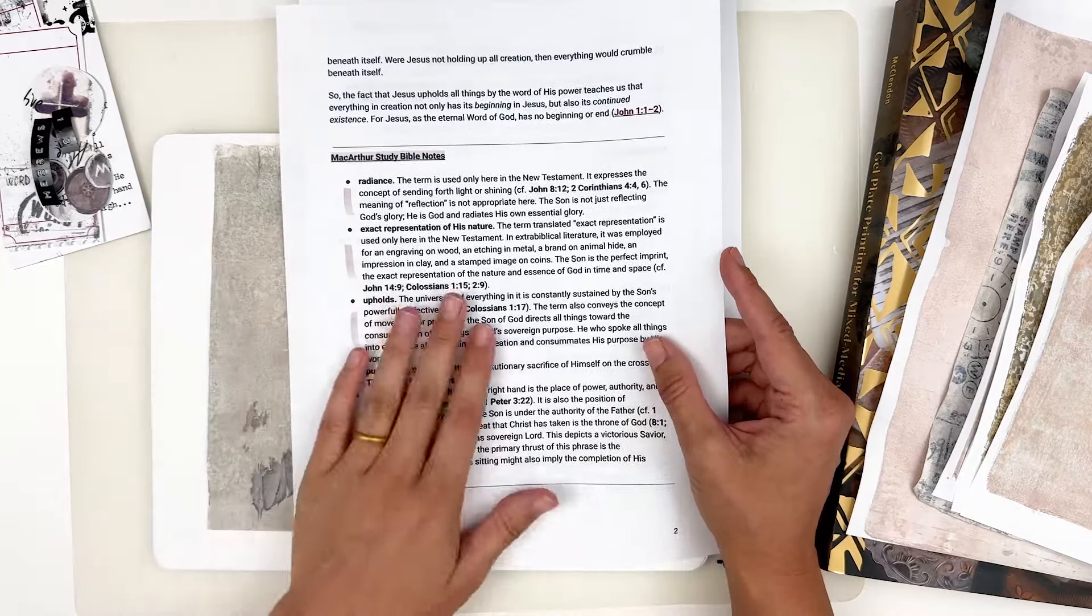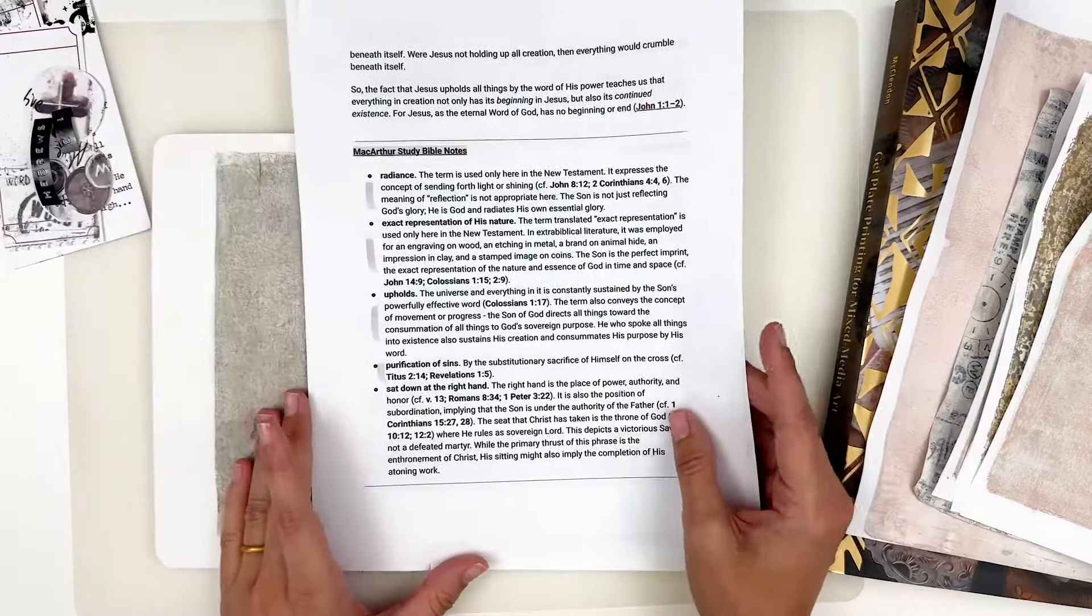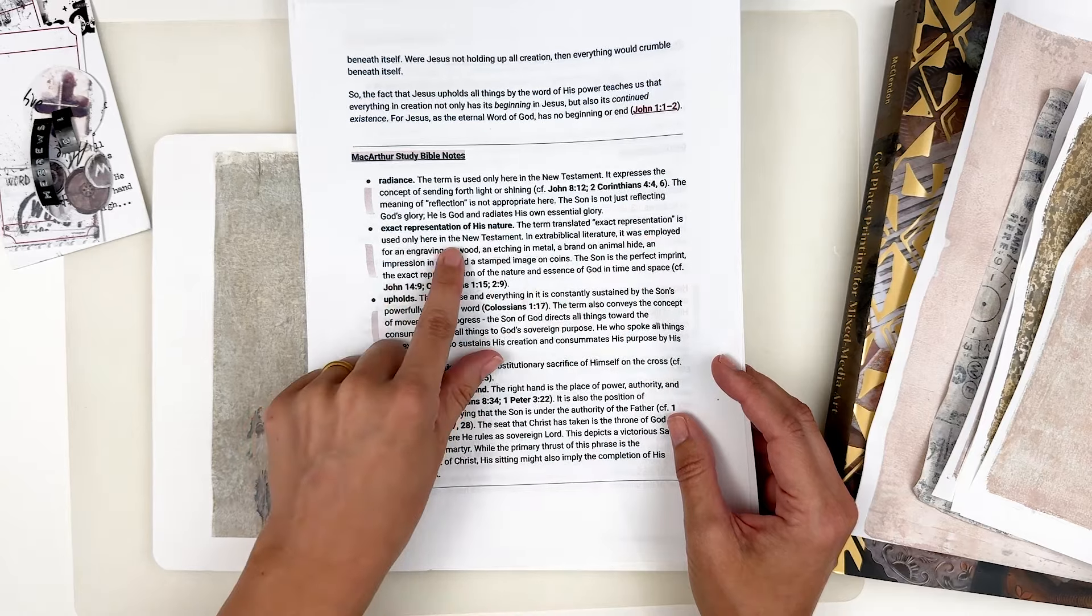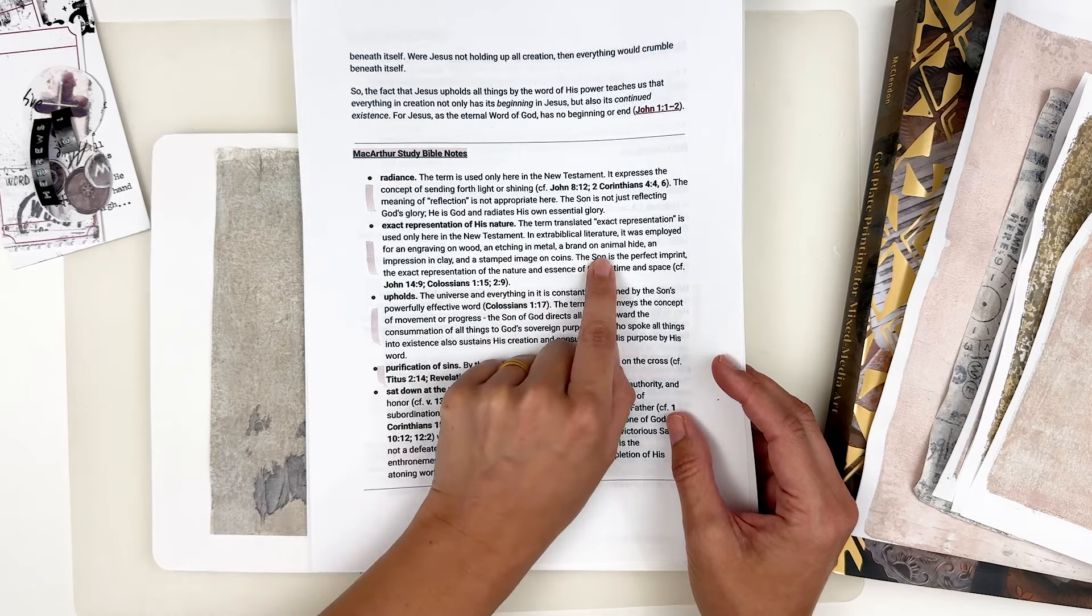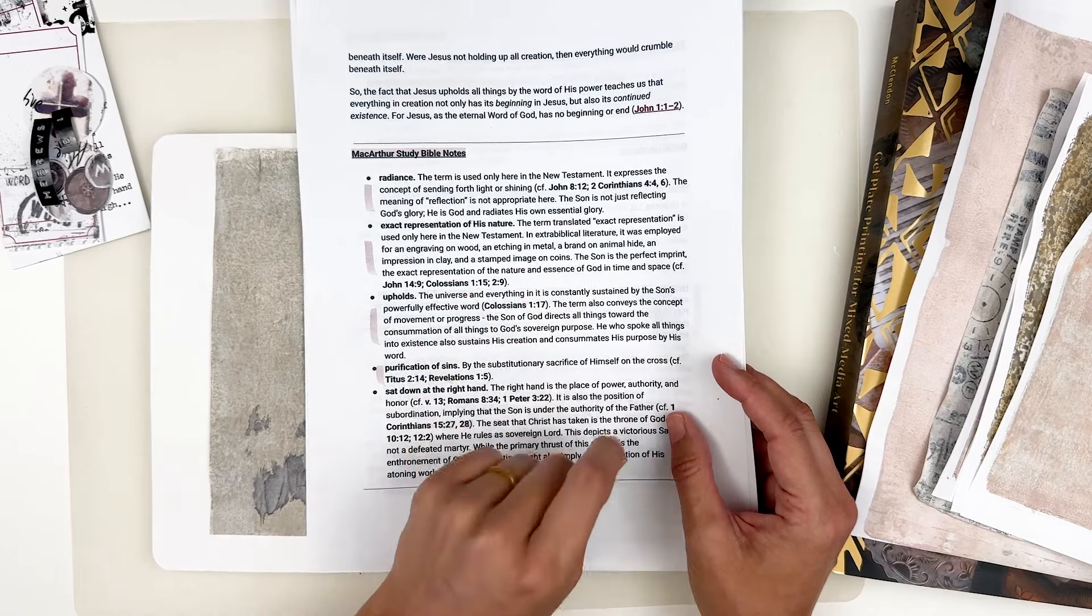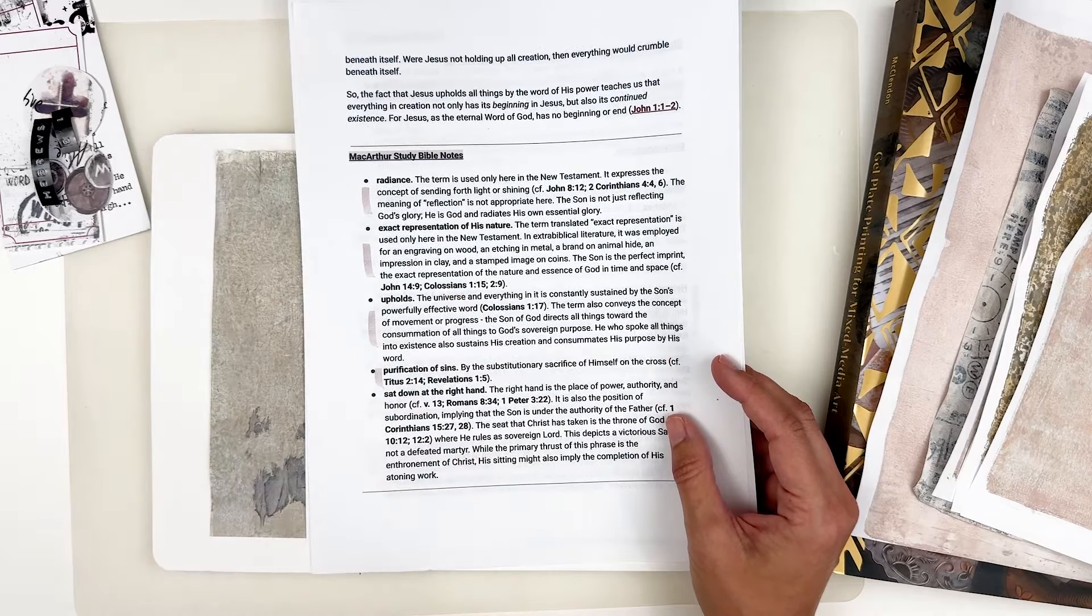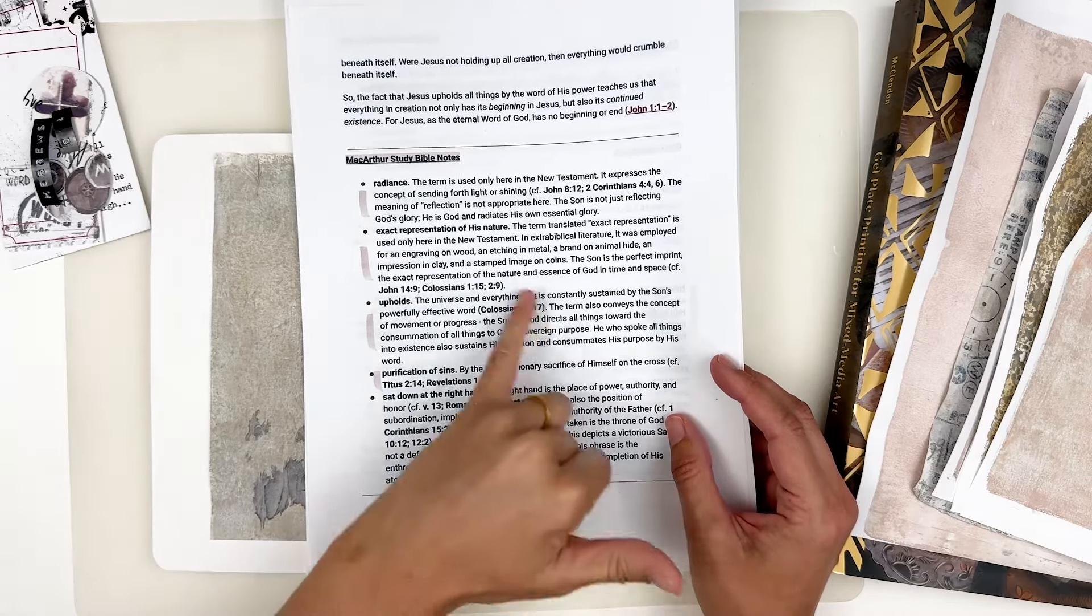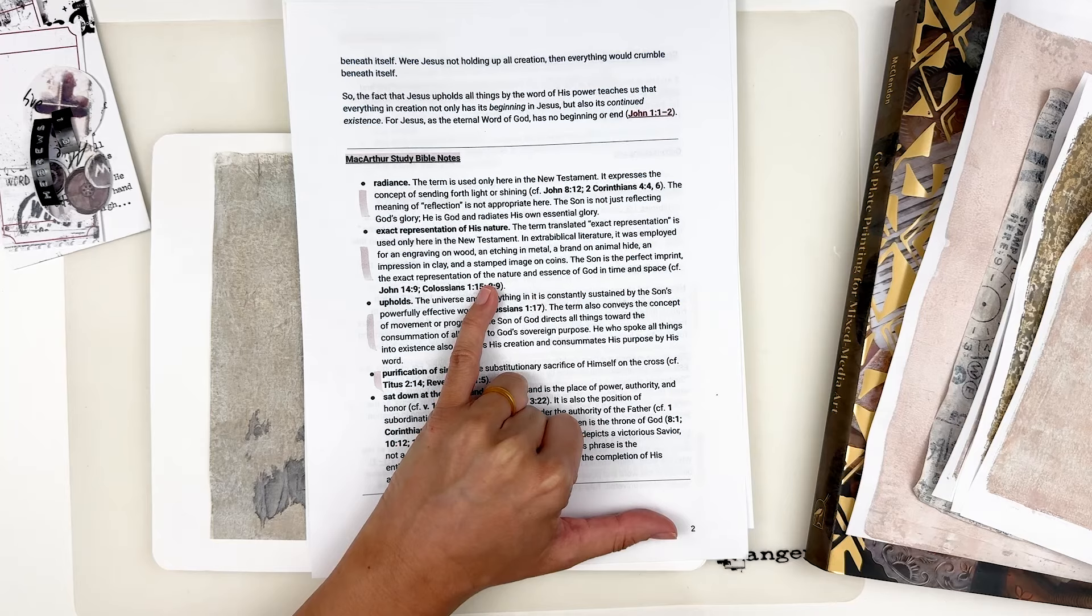For the term radiance, this term is used only here in the new Testament expresses the concept of sending forth light or shining. We have some cross references there. The meaning of reflection is not appropriate here. The sun is not just reflecting God's glory. He is God and radiates his own essential glory. Love that. You guys know how much I love word studies. So you can bet your bottoms that that word is in the words that he is that I've pulled together for you guys. So you can kind of dig into that more.